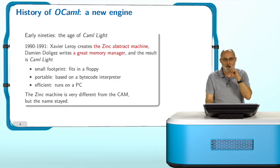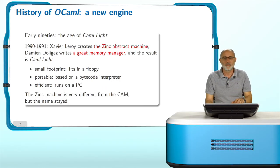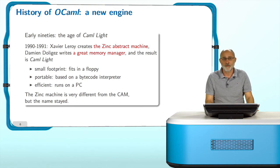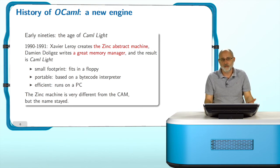The Zinc machine, which was core to the success of CAML light, is very different from the original Categorical Abstract Machine — but the name stayed, and so it is still called CAML.